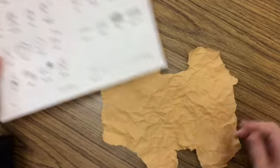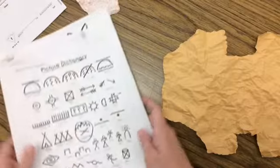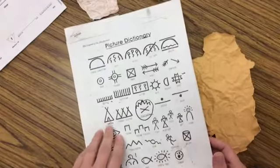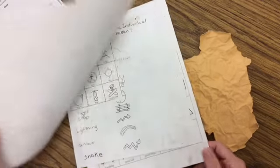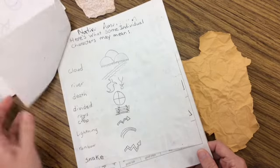Now the interesting thing about this is this is kind of the way that Native Americans would have written down important events that had happened to them. They don't have a symbol for every word, and I'm sure there's actually more symbols out there and you probably could find some on the internet as well.